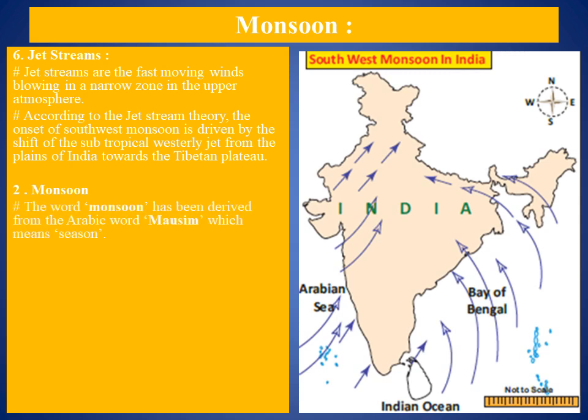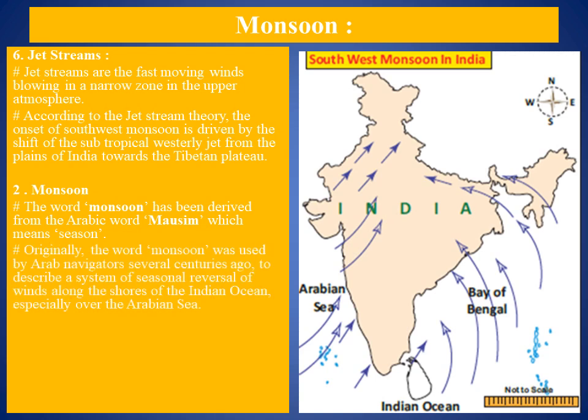The next sub-heading of the lesson is monsoons. The word 'monsoon' has been derived from the Arabic word 'mausim,' which means a season. Originally, the word monsoon was used by Arab navigators several centuries ago to describe a system of seasonal reversal of winds along the shores of the Indian Ocean, especially over the Arabian Sea. It blows from southwest to northeast during summer and from northeast to southwest during winter.